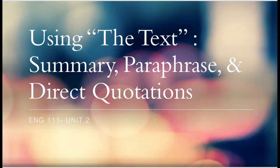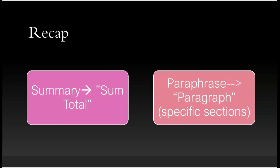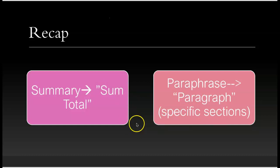Just to recap, I want to give you a reminder of summary and paraphrase and the difference between the two. Summary is looking at the gist, the sum total of the story in its entirety. A paraphrase, on the other hand, is more specific — it looks at specific detailed sections of a text. They're similar in that they both require you to use your own words. Summary doesn't necessarily need an in-text citation; however, a paraphrase does.